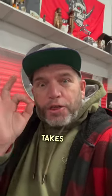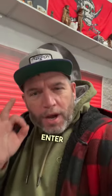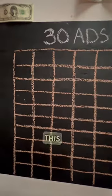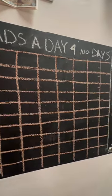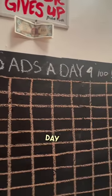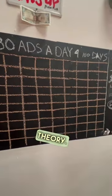You can see all over the place that it takes 30 items a day to enter an eBay algorithm. So I'm going to test it right here. I've made this little chart — I've got 100 squares here, 100 days. Today is day one. 30 ads a day for 100 days. We're going to go 30 ads and test this theory.